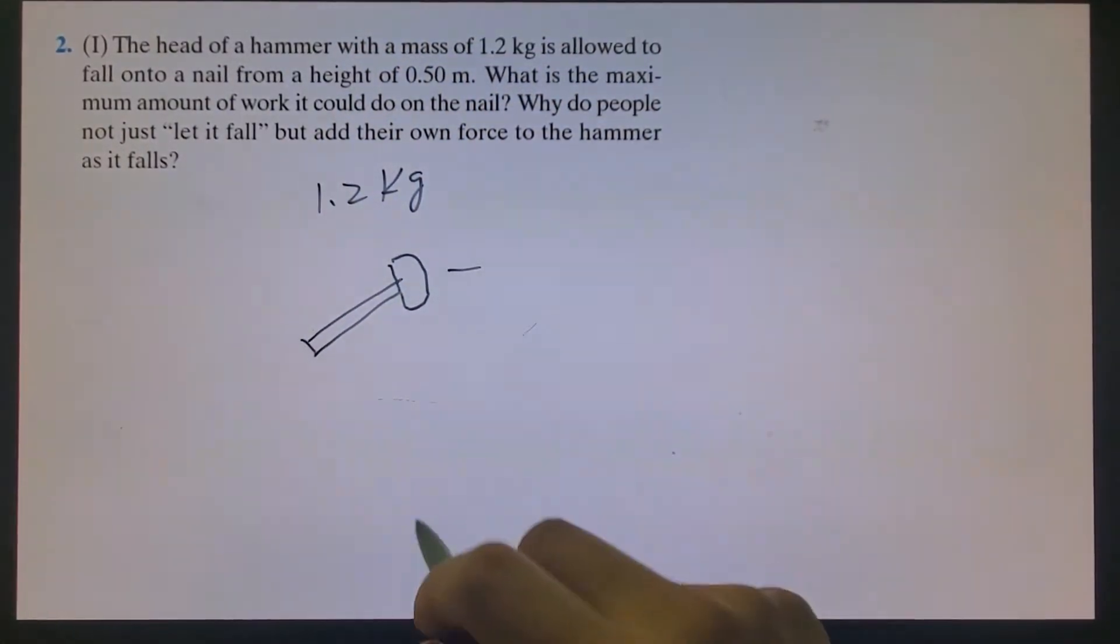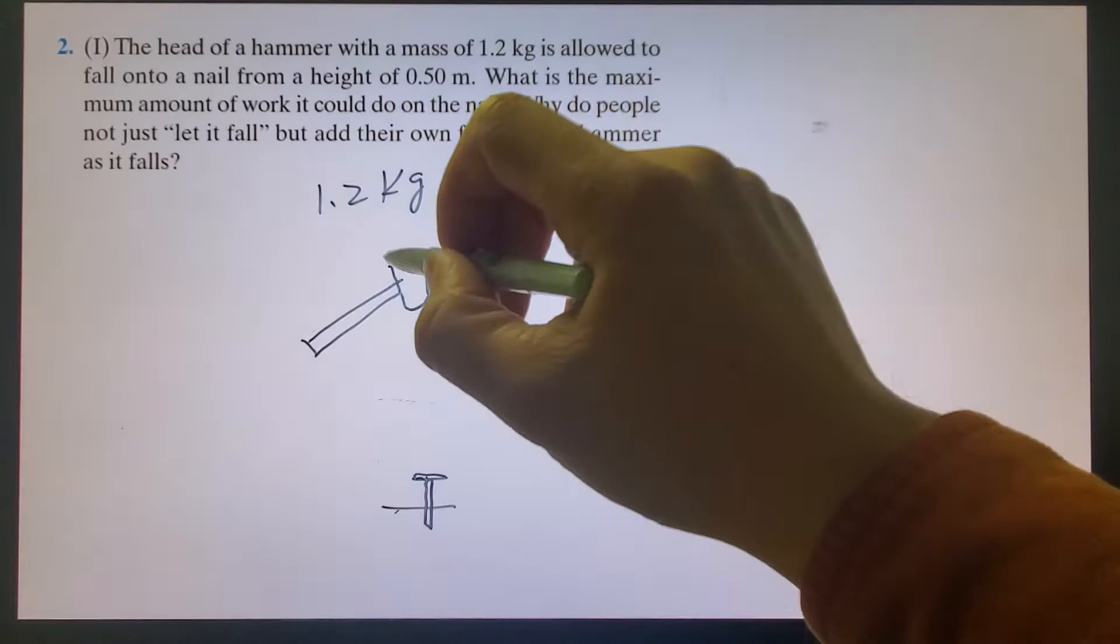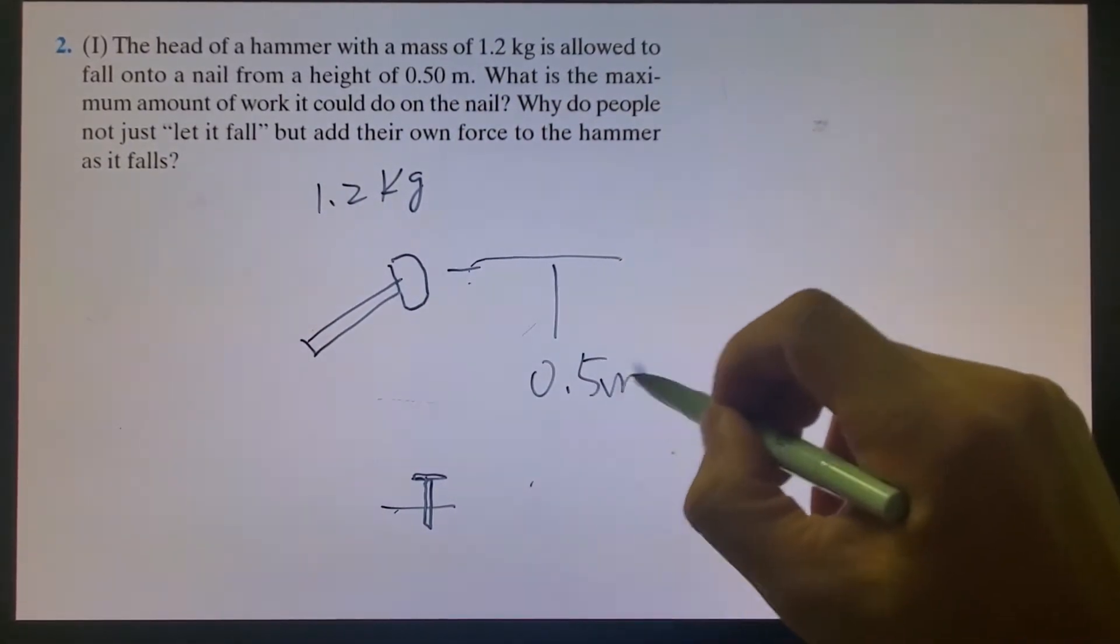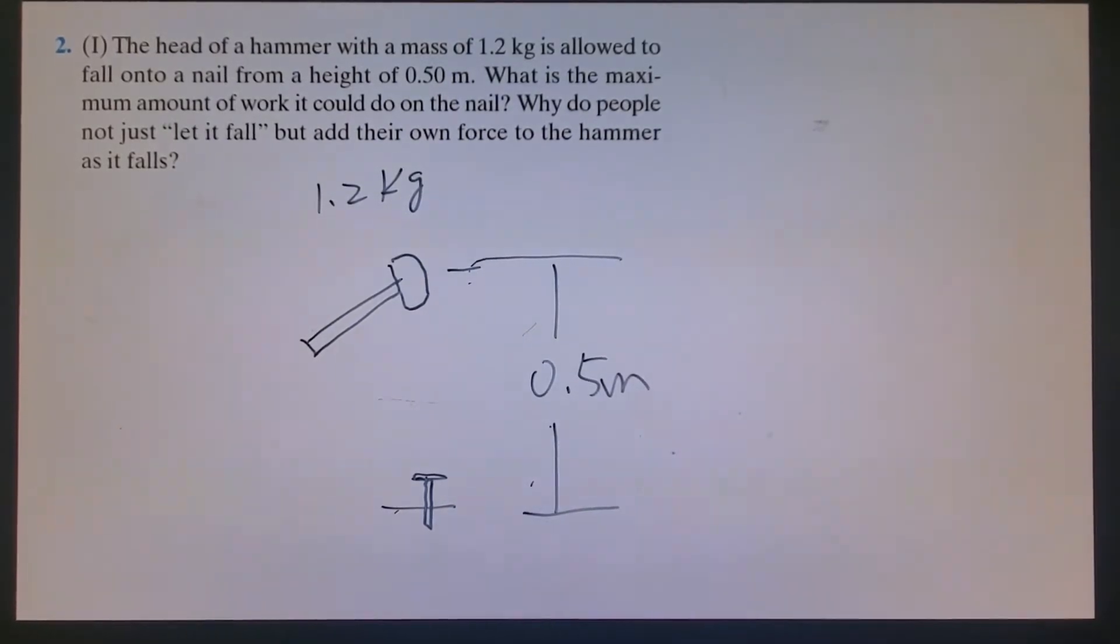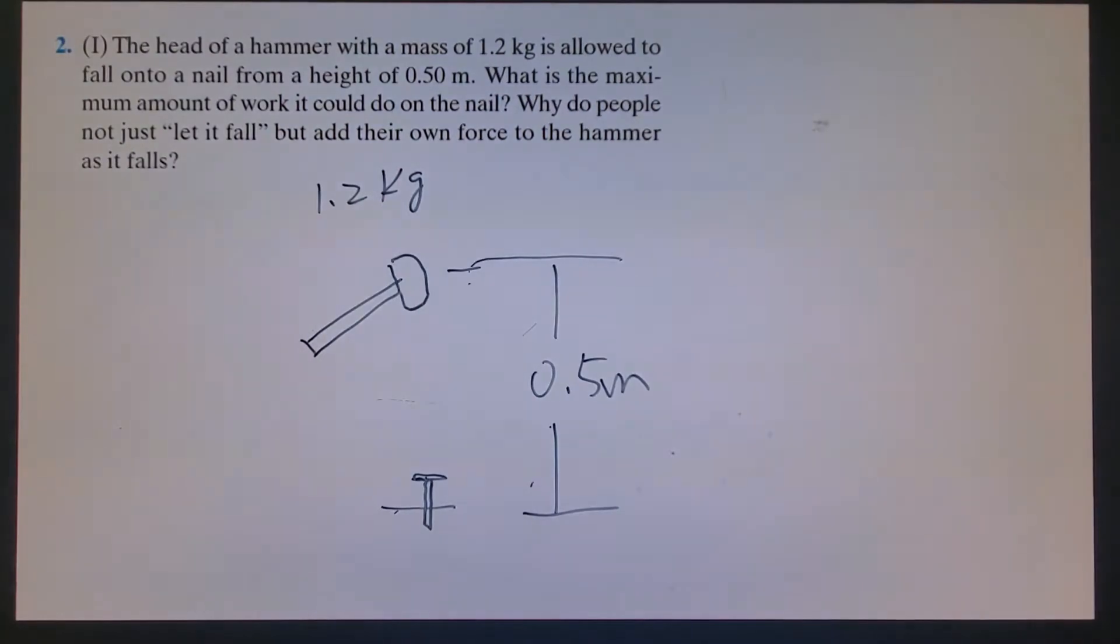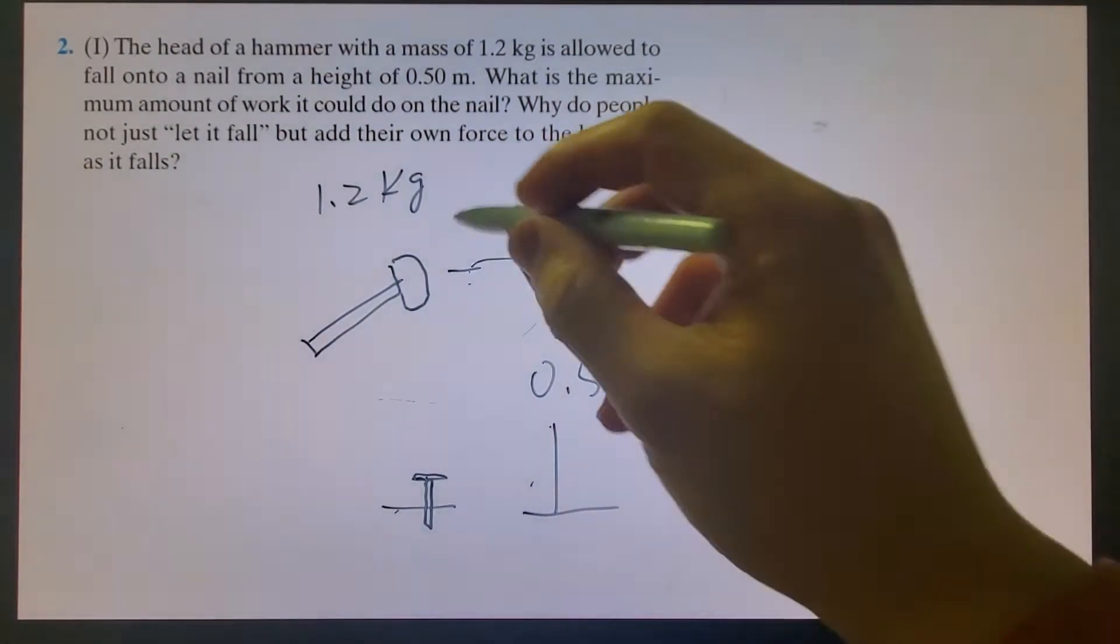There's a nail we're trying to put into the wood. This distance is about 0.5 meter. What is the maximum amount of work it could do to the nail?